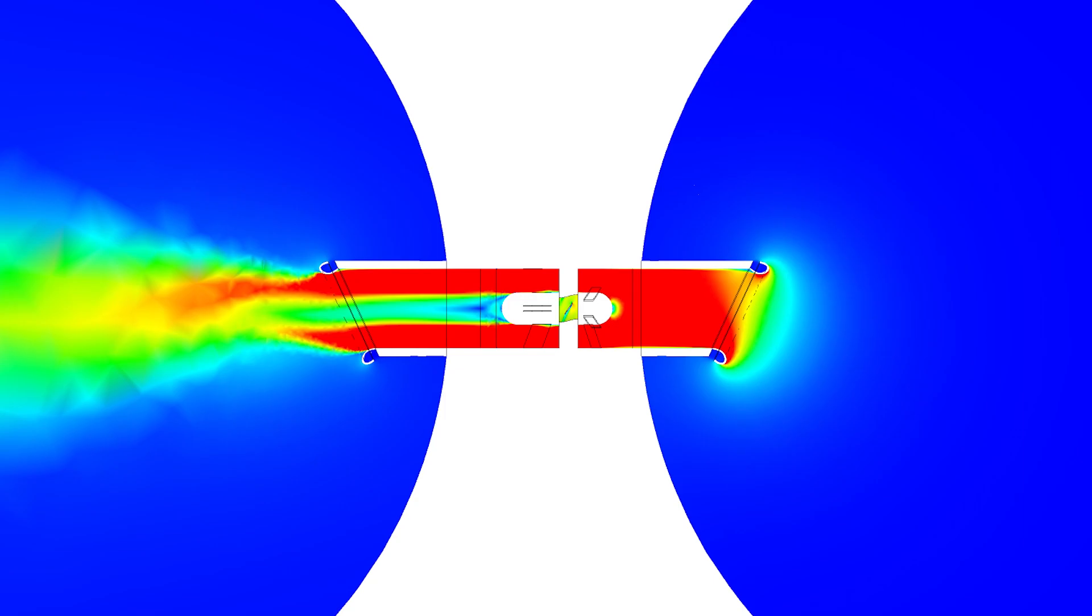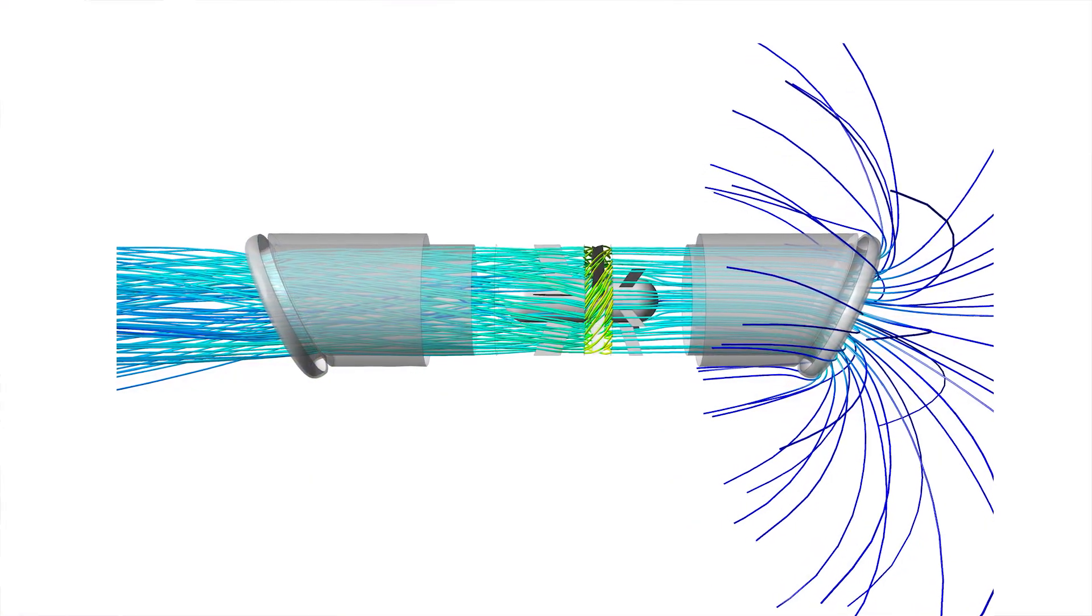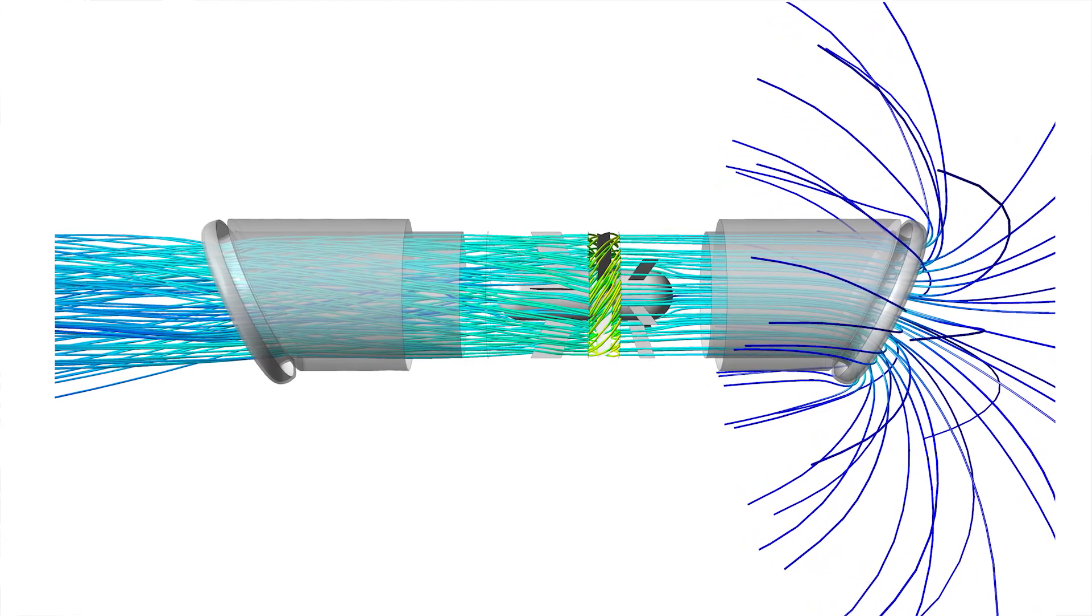What the Mojet does is that it reduces the power consumption of the fan and it also improves the thrust in the tunnel.